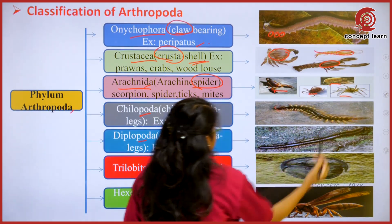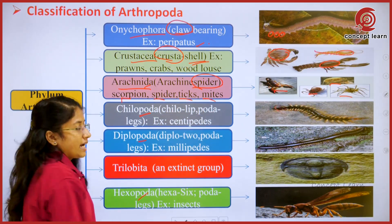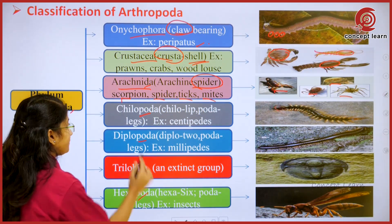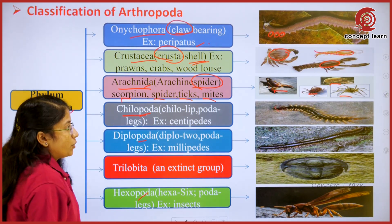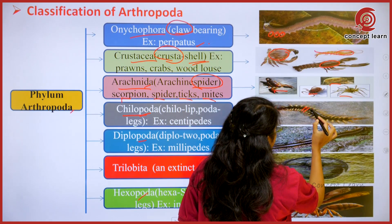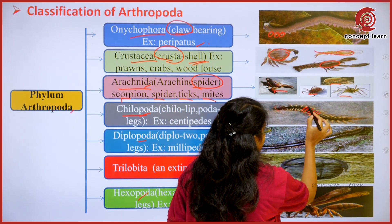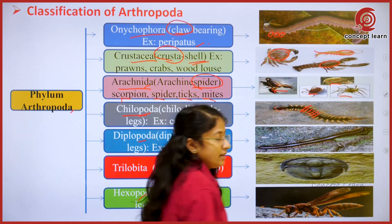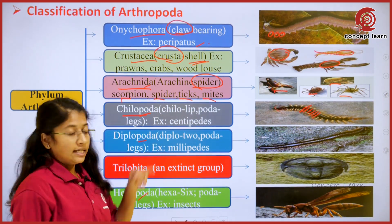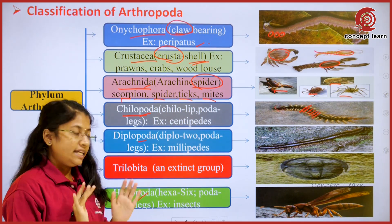Next comes the class Arachnida. 'Arachne' means spider — these all have a spider-like appearance. Mostly scorpions, spiders, ticks, and mites come under the class Arachnida. Coming to Chilopoda, here you can see there are different segments, and each segment is bearing one pair of legs.